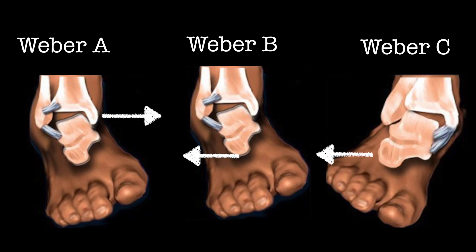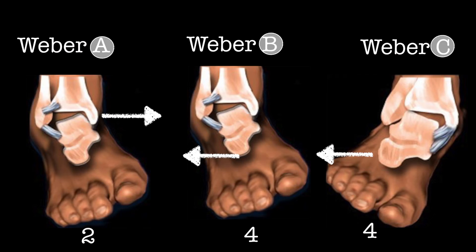Each of the Weber A, B, and C fractures has a set number of stages: A has two, B has four, and C has four. So remember: Weber A, B, C — two, four, four. Now that we've covered the basics, let's have a look at the specific fractures.